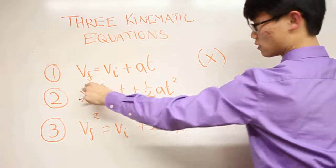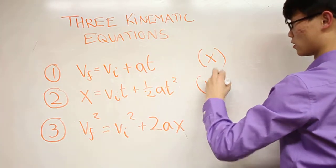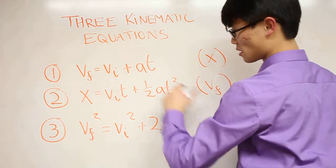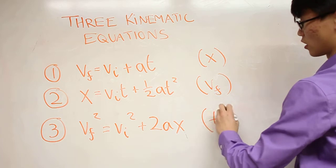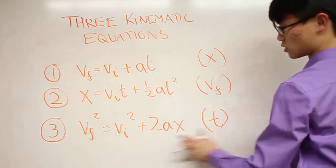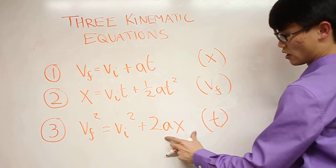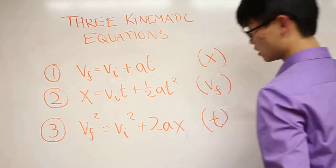For equation 2, what is missing? V_f is missing. So you use equation 2 if you don't care about the final velocity. And you use equation 3 if you don't care about time. I actually find that I use this one the most, because often you don't get a sense of time - you're only caring about distance and velocities.